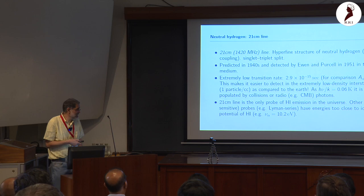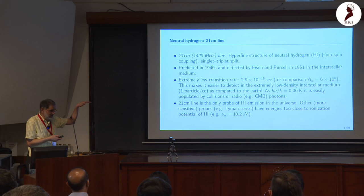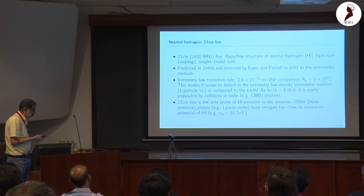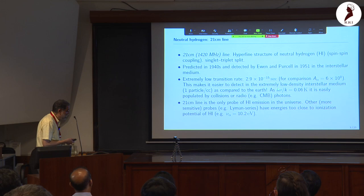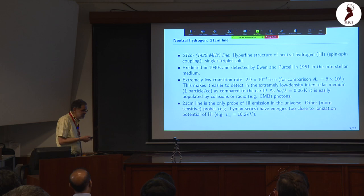One thing that marks this line — and we will come back to it again and again — is that it has an incredibly low transition rate. If you put an atom in the excited triplet state of the 21-centimeter line, the transition rate is 10^-15, meaning it takes a million years to decay on its own. For comparison, Lyman-alpha has a rate of 6×10^8 — a factor of 10^23 larger.